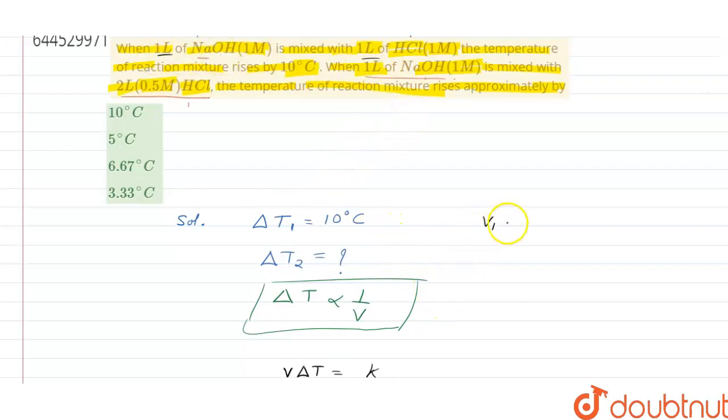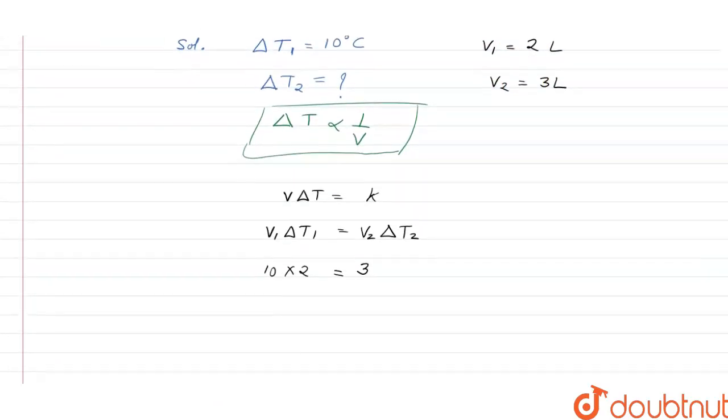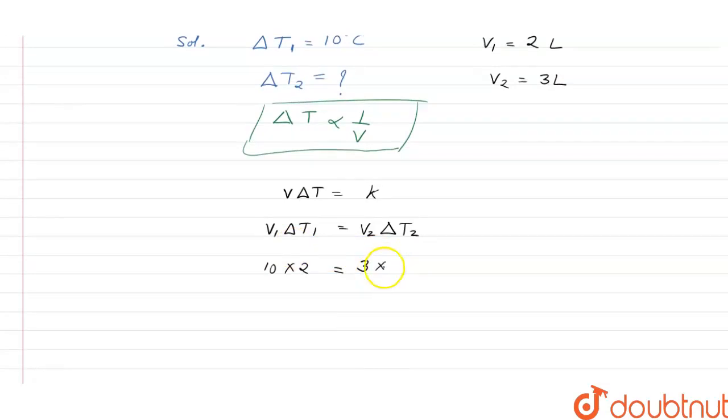For the second case, total volume became 1 liter and 2 liters, which is 3 liters. We are putting these values here: 2 times 10 equals 3 times delta T2. On solving this term, delta T2 equals 2 by 3, which comes out to be 6.67 degrees Celsius.